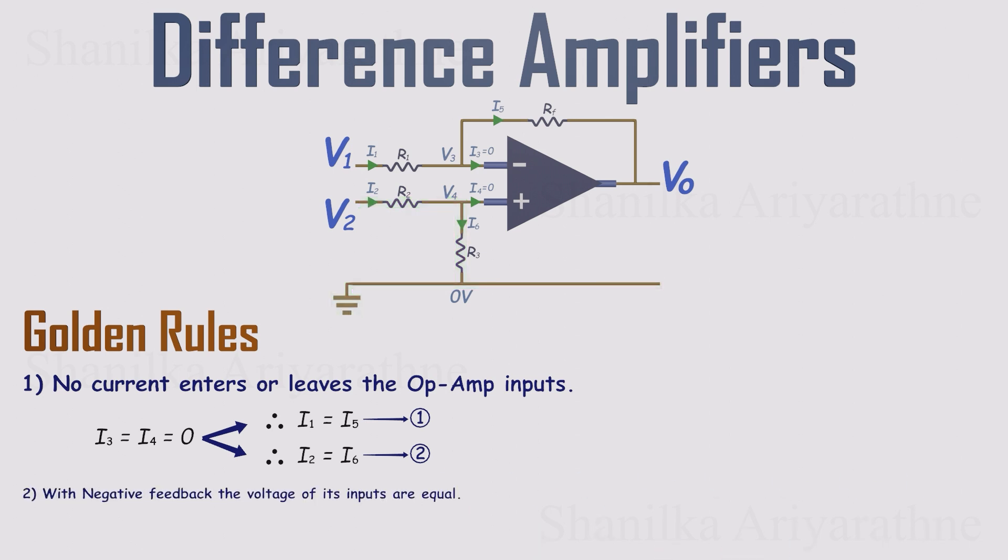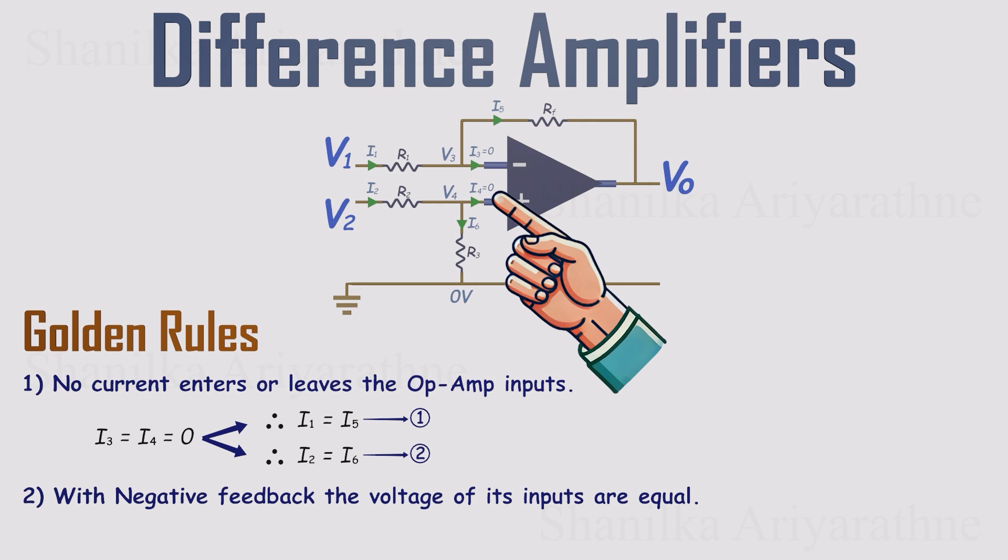Rule 2: With negative feedback, the op-amp drives its output, so the inverting and non-inverting inputs sit at the same voltage. In other words, V3 equals V4. That's our third equation. With those three rules in place, we can now use Ohm's law to turn currents into voltages and see exactly how the output responds to the inputs.